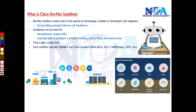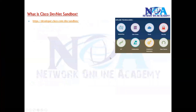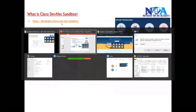Each sandbox is categorized by technology. For example, if you want to do data center automation and go to that category, you'll find the different data center automation options, software tools, and available options. You can use the URL developer.cisco.com/site/sandbox to visit the website.